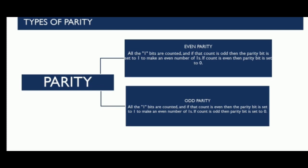In even parity, we count the number of ones in the given data. If the number of ones is odd, the parity bit is set to one. In odd parity, the number of ones is again counted. If the number of ones is even, the parity bit is set to one; otherwise, if the number of ones is odd, the parity bit is set to zero.